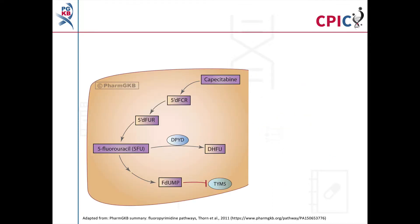Fluorouracil and capecitabine, a pro-drug for fluorouracil, are used to treat a variety of cancers. Fluorouracil is believed to work through the action of its metabolite, fluorodeoxyuridine monophosphate, or FdUMP. FdUMP blocks the TYMS enzyme, inhibiting DNA synthesis.